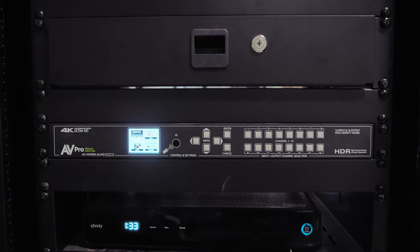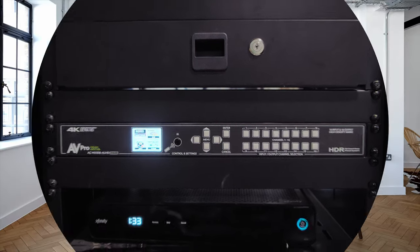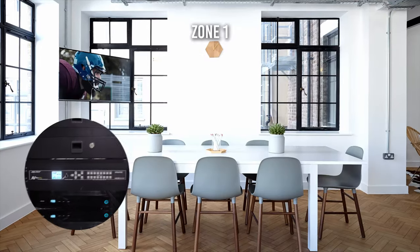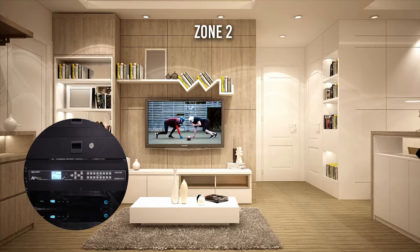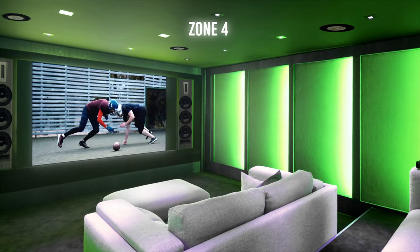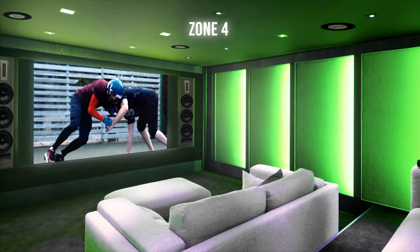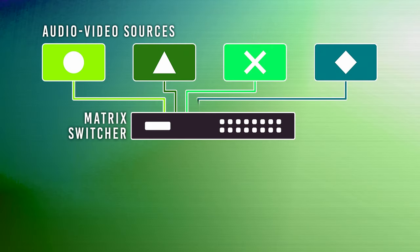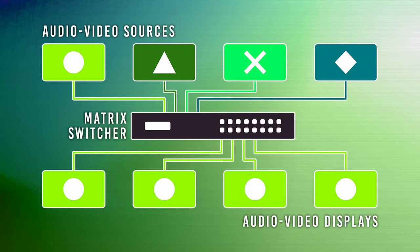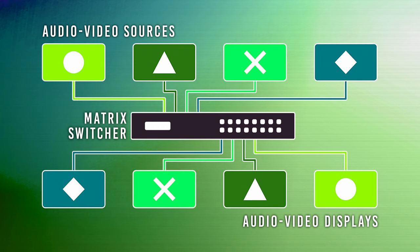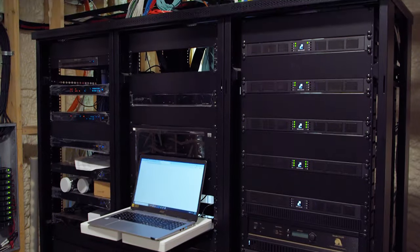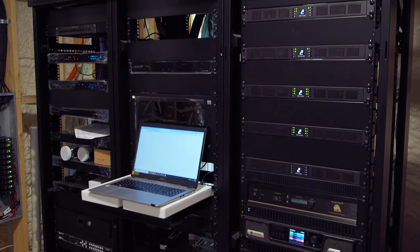Matrix switchers are the stable backbone of any multi-zone audio video distribution system. They can distribute one or many video sources to one or many displays. With a matrix switcher, you can select video sources to appear on your display of choice by distributing signals around an area while also keeping sources tucked away in a back room.